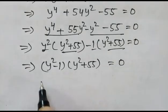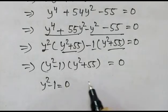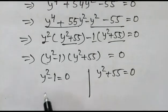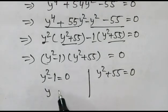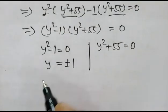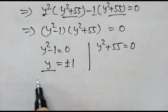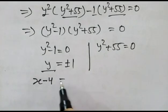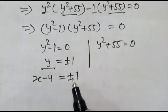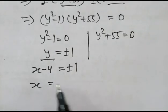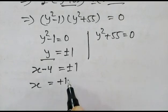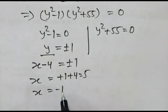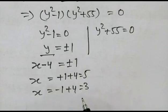We now have two cases: y² minus 1 equals 0 and y² plus 55 equals 0. From the first case, y equals plus or minus 1. Since y equals x minus 4, we have x minus 4 equals plus or minus 1. So x equals positive 1 plus 4 equals 5, and taking the minus sign, x equals minus 1 plus 4 equals 3.